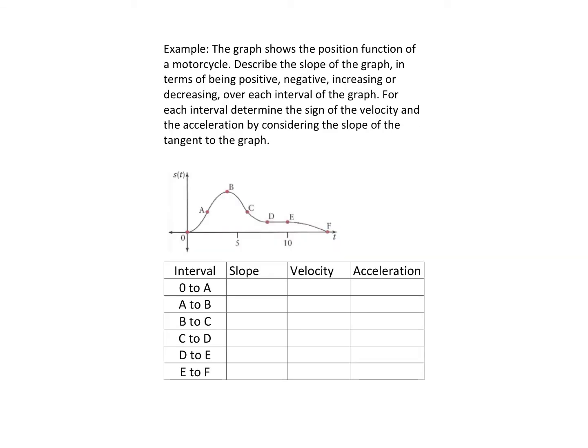Let's look at this example where we have a motorcycle traveling. We want to look at what the slope of the graph tells us in terms of being positive or negative, whether that slope is increasing or decreasing over each interval, and then look at how that affects the acceleration, which is the change in the slope of the tangent to the graph. First we just want to look at the slope between all these intervals and decide whether it's positive or negative.